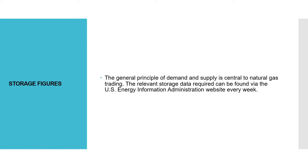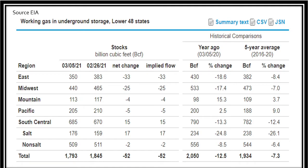The general principle of demand and supply is central to natural gas trading. The relevant storage data required can be found via the US Energy Information Administration website every week. The report shows a breakdown of storage changes per region on a weekly, yearly, and 5-year average basis. Due to the volatile nature of natural gas around the release of storage figures, it is best to get these figures as soon as possible and in an easy-to-read manner.